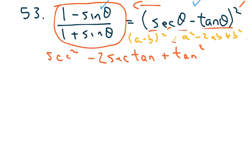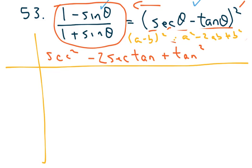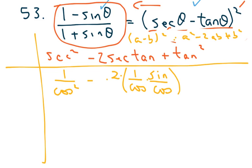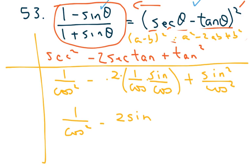Now I rewrite everything in terms of sine and cosine. Secant squared becomes one over cosine squared. The middle term becomes two times one over cosine times sine over cosine, and tangent squared becomes sine squared over cosine squared. Cleaning that up gives me one over cosine squared, minus two sine over cosine squared, plus sine squared over cosine squared.